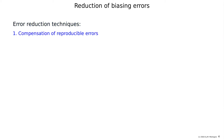One technique is compensation of reproducible errors. Compensation is a technique in which we reproduce an error, invert it, subtract it from the original signal, and then we have compensated for the error.